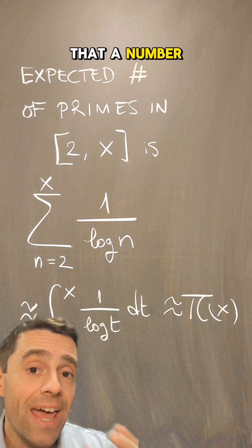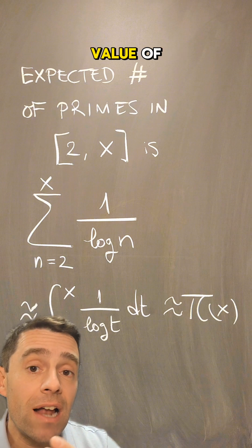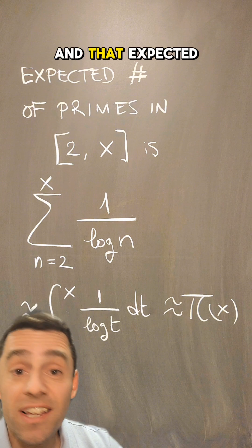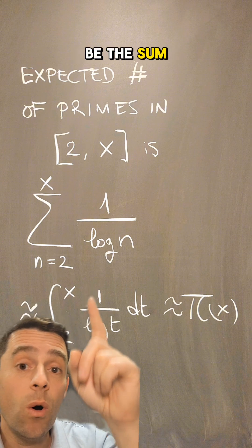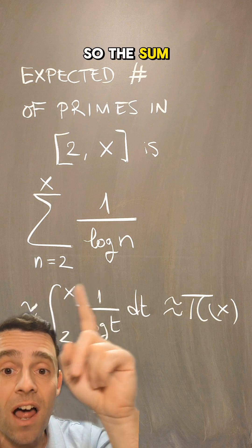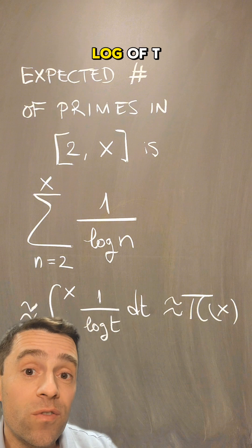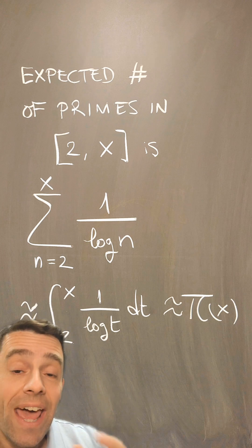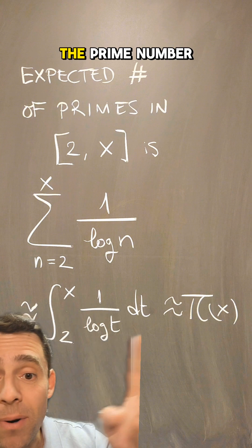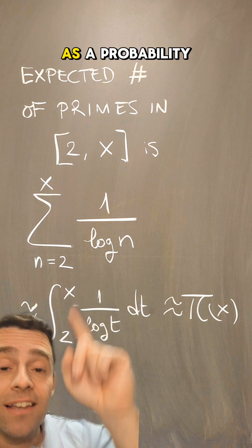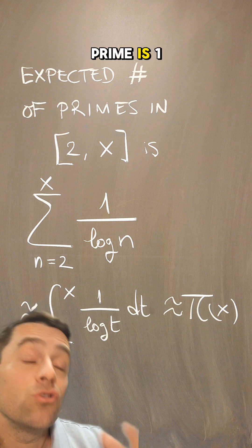Let's suppose that the probability that a number n is prime is 1 over log of n. Then what is the expected number of primes in the interval from 2 to x? It will be the expected value of how many primes are in that interval — the probability that 2 is prime plus the probability that 3 is prime plus the probability that 4 is prime, and so on. That will be the sum of 1 over log of 2 plus 1 over log of 3 plus 1 over log of 4, etc. — the sum from 2 to x of 1 over log of n. That sum is an approximation of the integral from 2 to x of 1 over log of t dt, which by the prime number theorem is asymptotic to pi of x, the actual number of primes from 2 to x. So if you run that argument backwards, the prime number theorem can be interpreted as the expected value of the number of primes from 2 to x, if you assume that the probability that n is prime is 1 over log of n.